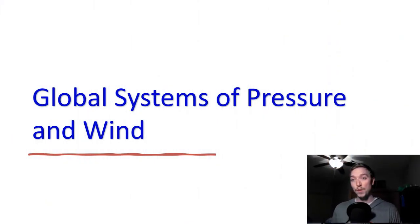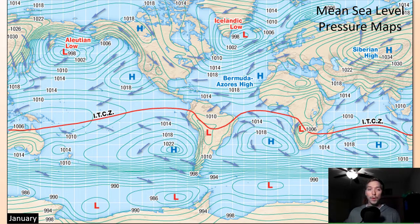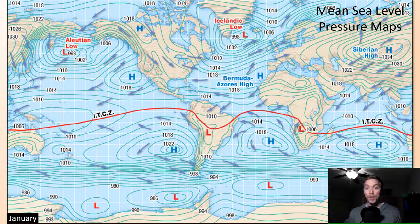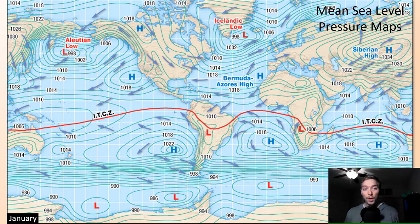We're going to start with the global system of pressures and winds. Looking at a map of mean sea level pressure in January, we see the Aleutian low, the Icelandic low, the Bermuda-Azores high, and the Siberian high — located north of the ITCZ, the Intertropical Convergence Zone. Generally speaking, we see high pressure systems setting up around 30 degrees north and south, low pressure systems a bit more poleward, and low pressure systems right along the equator near the ITCZ.